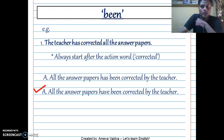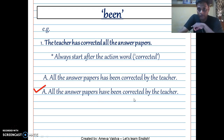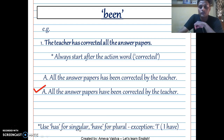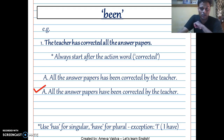The reason: we had 'has' in the question because it was singular ('the teacher'), but in the answer we have 'all the answer papers,' which is plural. You cannot say 'all the answer papers has' — it must be 'have.' Has is used for singular; have is used for plural. The exception is 'I' — even though 'I' is singular, it is always 'I have,' never 'I has.' In the past tense, 'had' is used regardless of singular or plural.